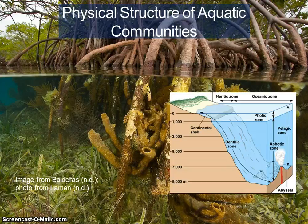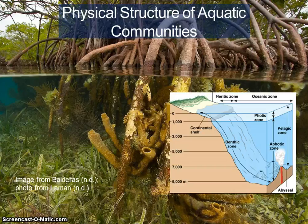Aquatic ecosystems have distinctive profiles of temperature and oxygen. Smith and Smith define the epilimnion as the warm, oxygen-rich upper layer of water in a lake or other body of water, usually seasonal. The metalimnion is characterized by the thermocline, and the hypolimnion is the cold, oxygen-poor zone of a lake below the thermocline.